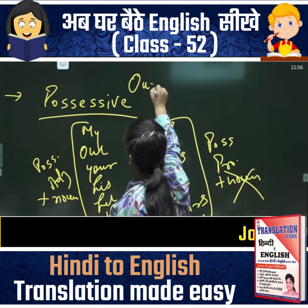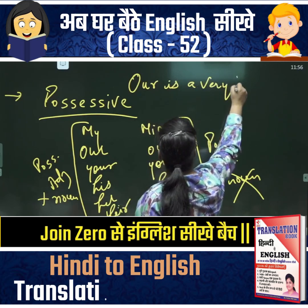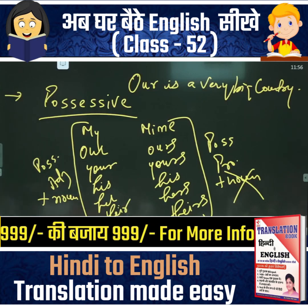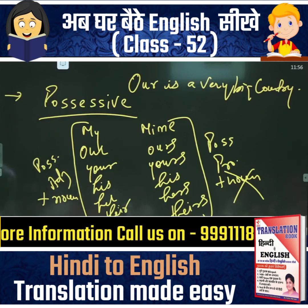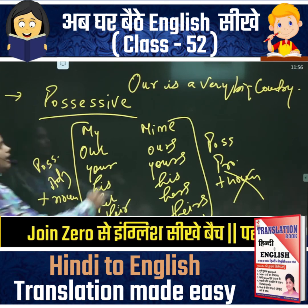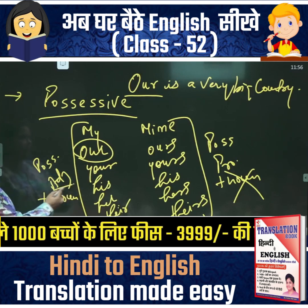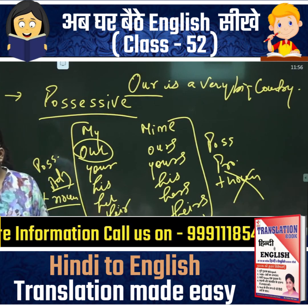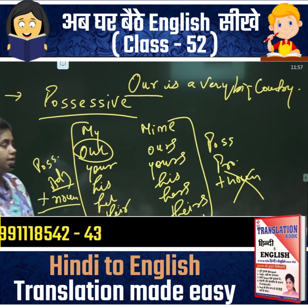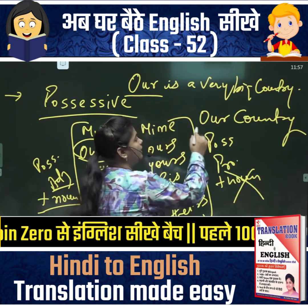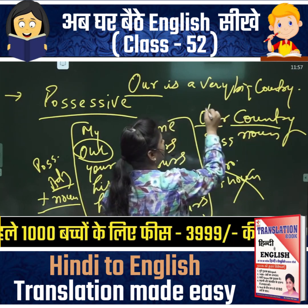Dekho — maine kaha 'R is a very big country.' Same cheez ek din pehle bhi padhayi thi, tab bhi aisa hi likha tha — jaanke same likha hai taaki jo us din class mein the, woh bata sakein galti. Main keh rahi hoon: hamaara desh bahut bada hai. 'R' shabd dikha raha hai — kya is ke saath noun hai? To yeh adjective hona chahiye, jaise my pen, his mother, your father — noun hona chahiye.